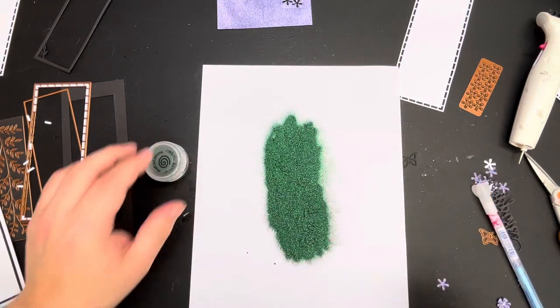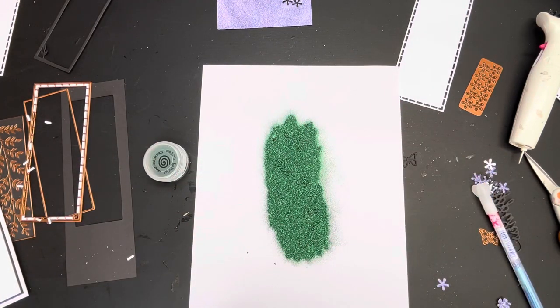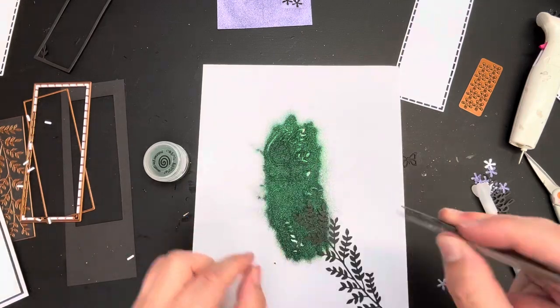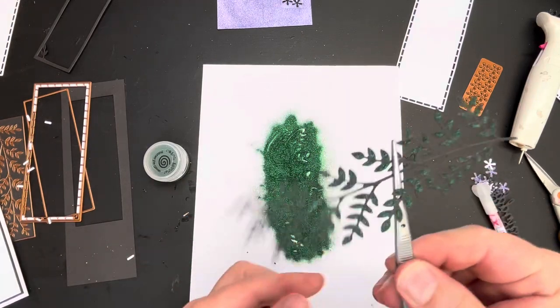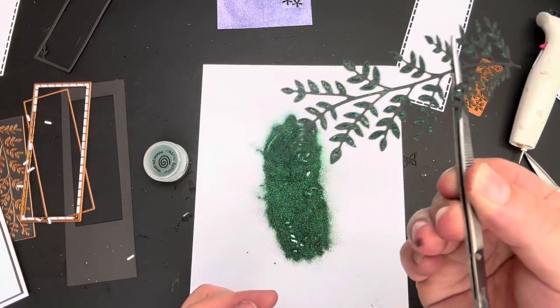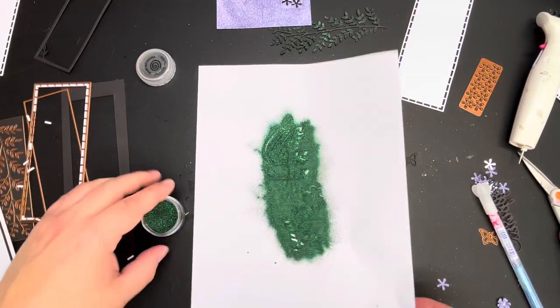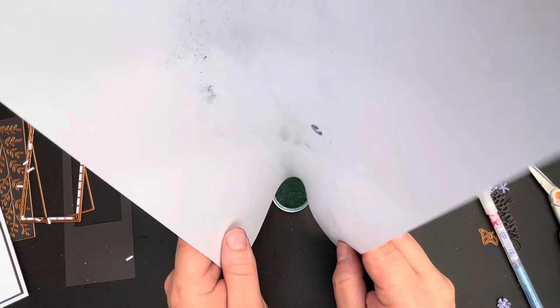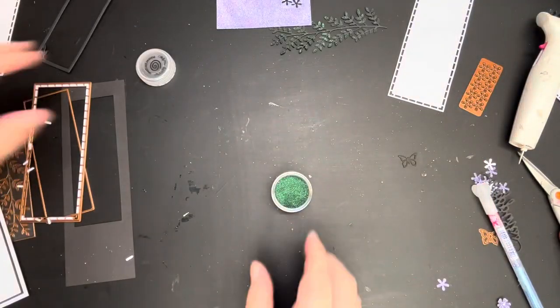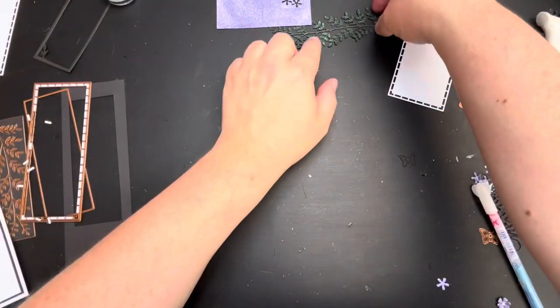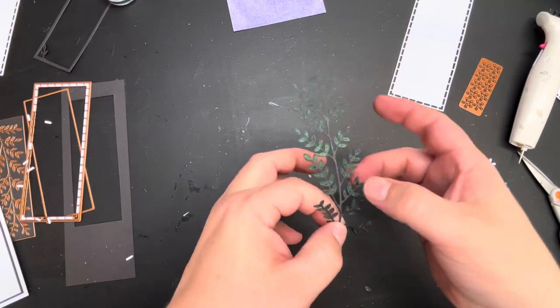Now because we were working with our Cosmic Shimmer polished silk glitter earlier I thought we'd bring some more of this in and this time it's the hunter green color that I have sprinkled over the top. I can then lift out my die cut and as you can see I have got the loveliest little green areas on top of my black die cut. I love it when we put glitter on top of black cardstock because it just somehow sparkles even more than you might imagine.